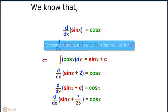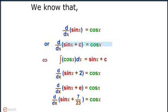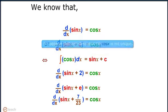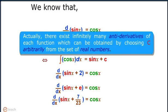We observe that the antiderivative for cos x is not unique. Actually, there exist infinitely many antiderivatives of each function, which can be obtained by choosing c arbitrarily from the set of real numbers.